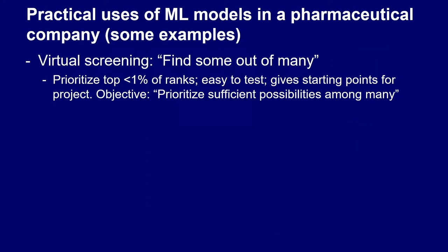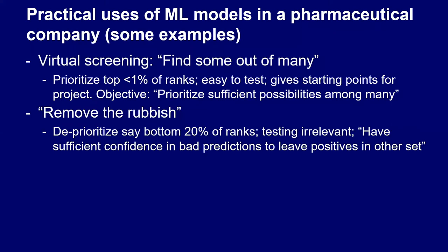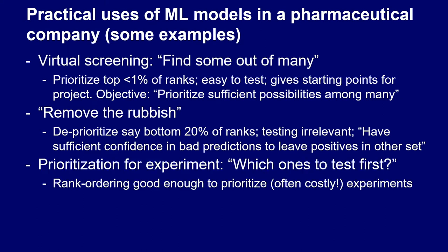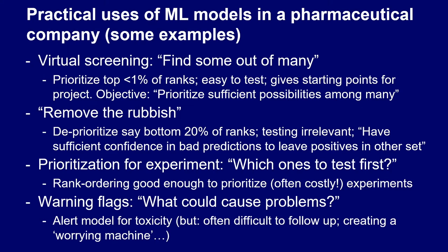How can you use machine learning models in a pharmaceutical company? You can have virtual screening models to prioritize a ranked list. There's a 'remove the rubbish' model — de-prioritizing around 20 percent of compounds where you're highly confident they are toxic, which requires a very different loss function. You can also prioritize for experiments, have warning flags for potential toxicity, but be careful you don't end up with a 'warning machine' that alerts you to 20 possible problems without guidance on what to do.